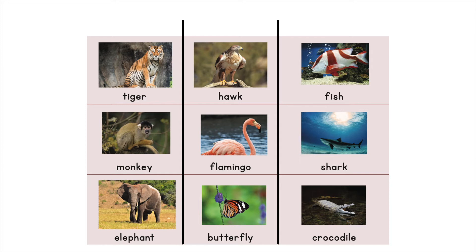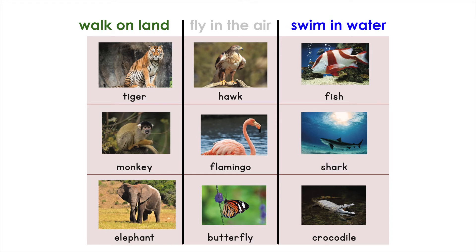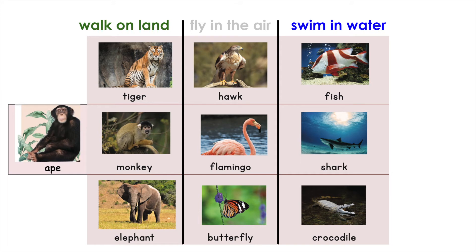Now this is what we saw in social studies. It's really quite simple — we've talked about this a lot before. So here we have different categories, different groups. We have animals that walk on land, animals that fly in the air, and animals that swim in the water. Let's not forget the ape, which especially is one that walks on land. Now let's read these words over one more time to make sure that we can read them and know what they are.